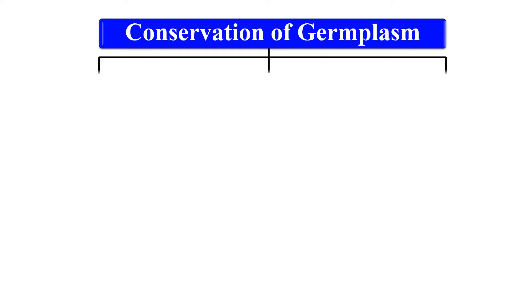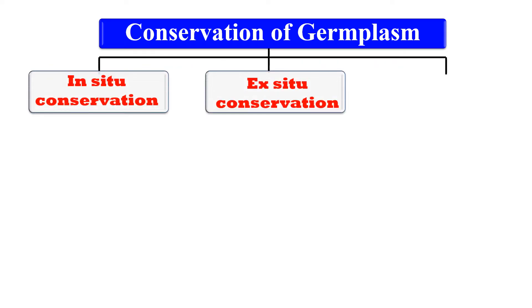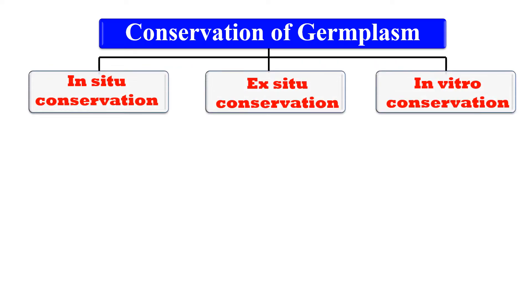So here, how we can conserve the germplasm? Germplasm can be conserved by three ways: first, in-situ conservation; second, ex-situ conservation; and third, in vitro conservation.